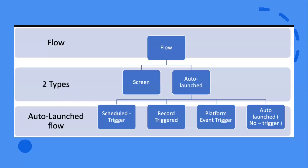The other category is Auto-Launched Flow. The first type is Scheduled Trigger Flows — these get launched at a specific time and frequency for each record in a batch and run in the background. If you're already aware of scheduled batch classes, you'll get a better idea of how scheduled trigger flows work.